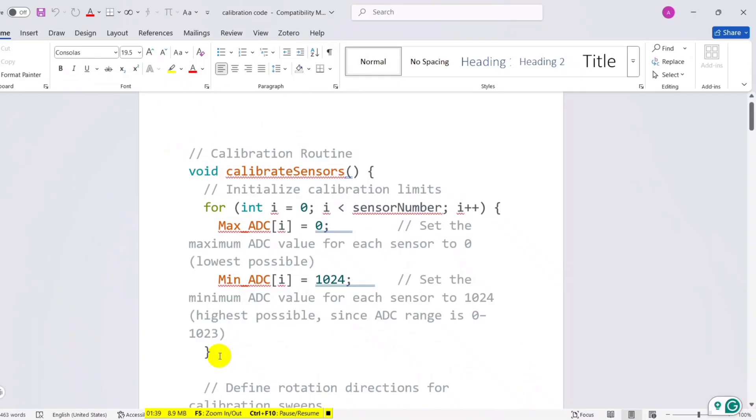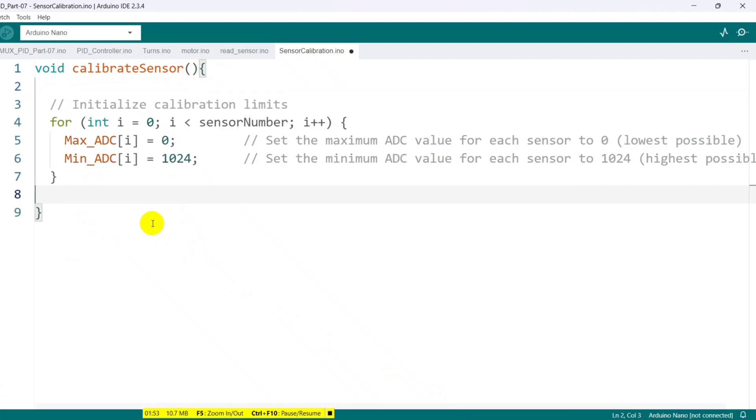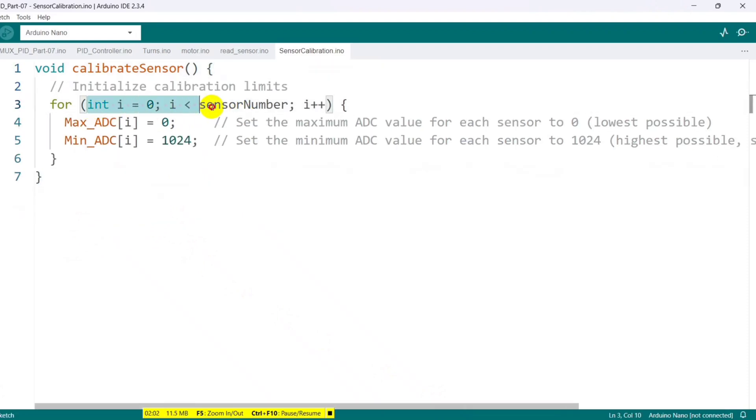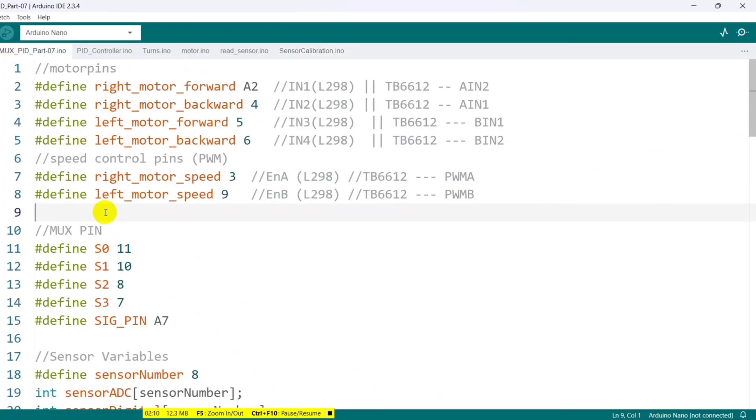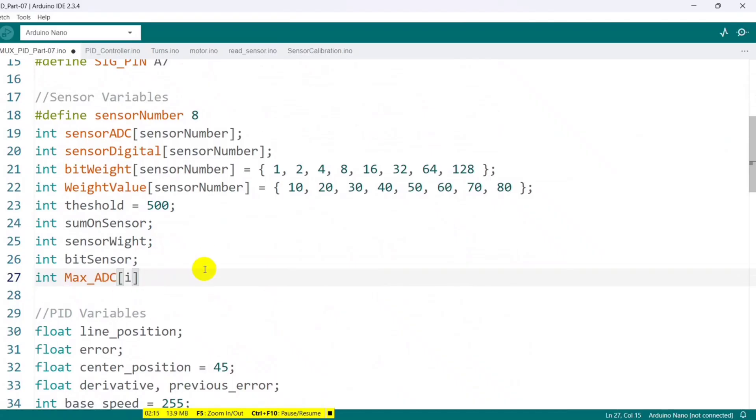Inside this function, I will write the calibration logic. Since I've already written the code, I'm copying and pasting it here step by step to save time and keep the video concise. I start with a loop to set the initial minimum and maximum ADC ranges in the max ADC and min ADC arrays. I then define these two arrays at the beginning of the code with sizes based on the number of sensors.